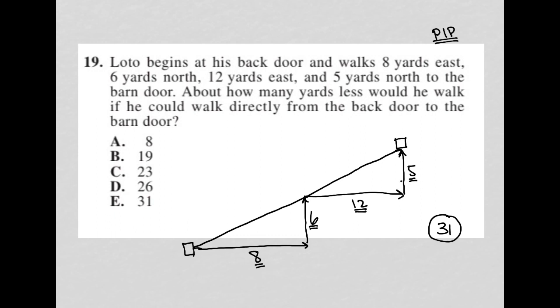Because when we draw this out, we can see that these are both right triangles. And I just need to figure out what is the hypotenuse of this right triangle, which I'll label as x, and what is the hypotenuse of this right triangle, which I'll label as y.